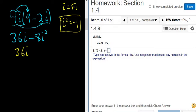So 36i minus 8 times negative 1. So 36i, negative and negative is positive, so you get plus 8.